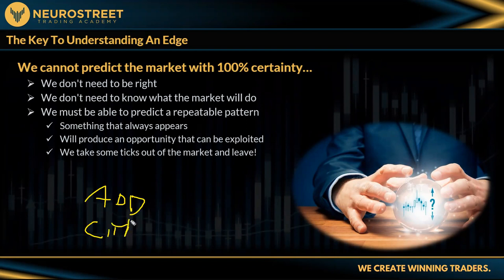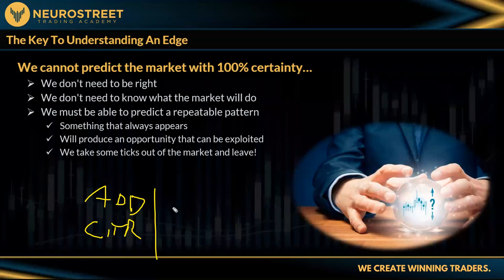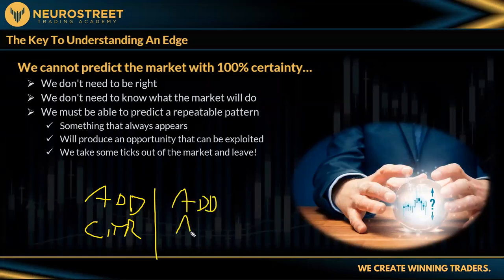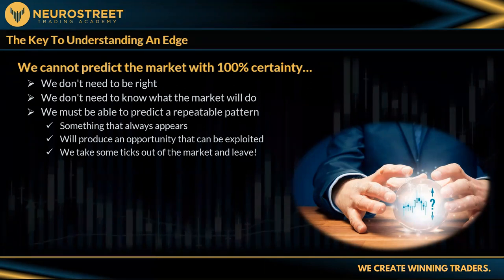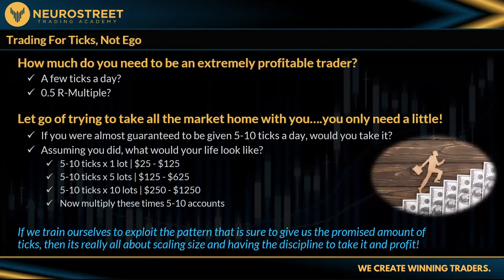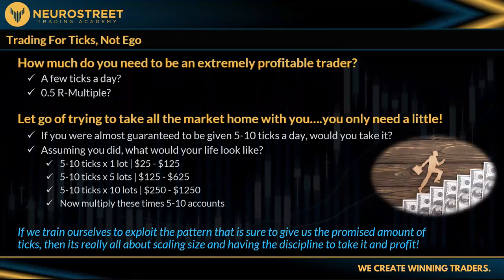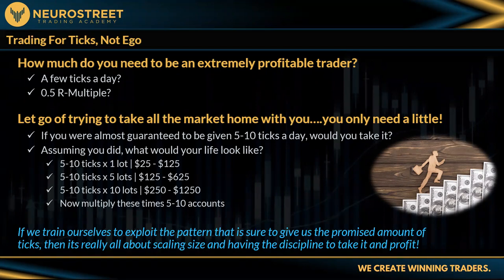All you need to do is add contracts. When you get to that point, if you're trading prop firms, just add accounts and make more money that way. It's all about making this as simple as possible for ourselves. Over 90% of traders fail — so why try to do the same things they're doing? We have to be different, just different enough to make sense.